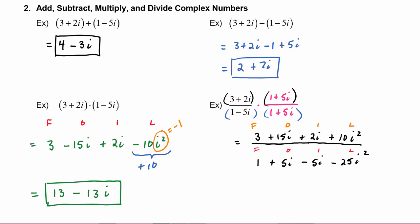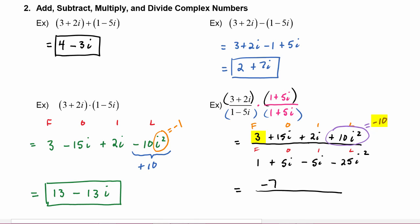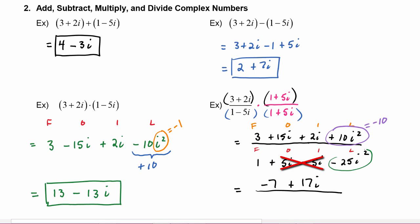Combining like terms: i² is negative 1, so plus 10i² becomes negative 10. In the numerator, 3 minus 10 is negative 7, and plus 15i plus 2i becomes plus 17i. In the denominator, the plus 5i and minus 5i cancel out, and minus 25i² becomes plus 25. So the denominator is 1 plus 25, which is 26.